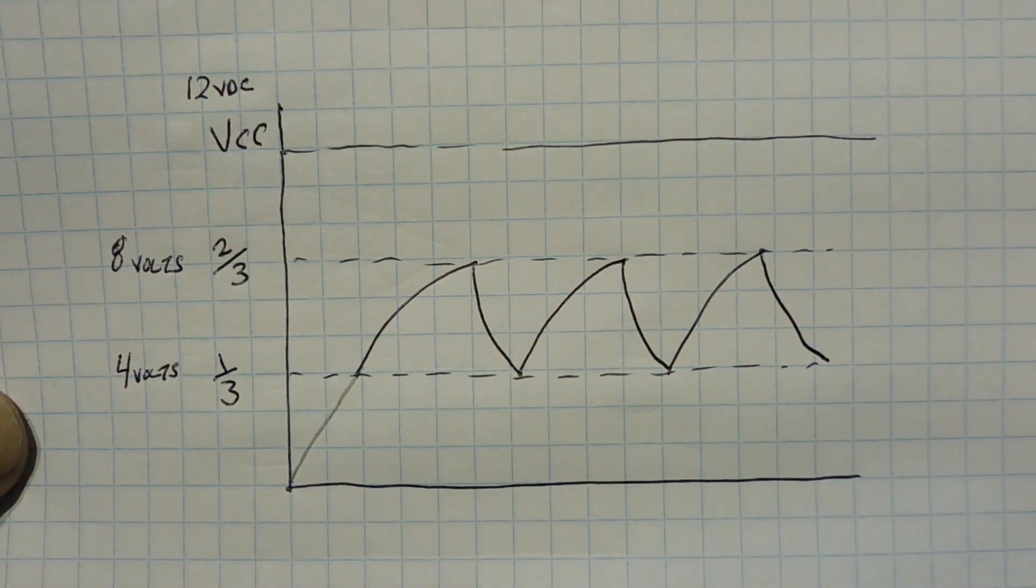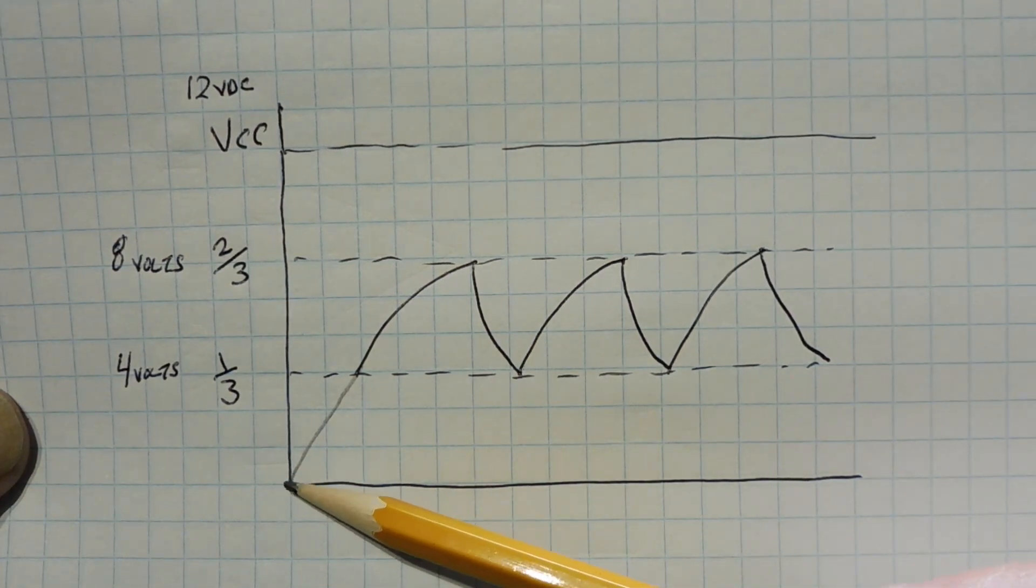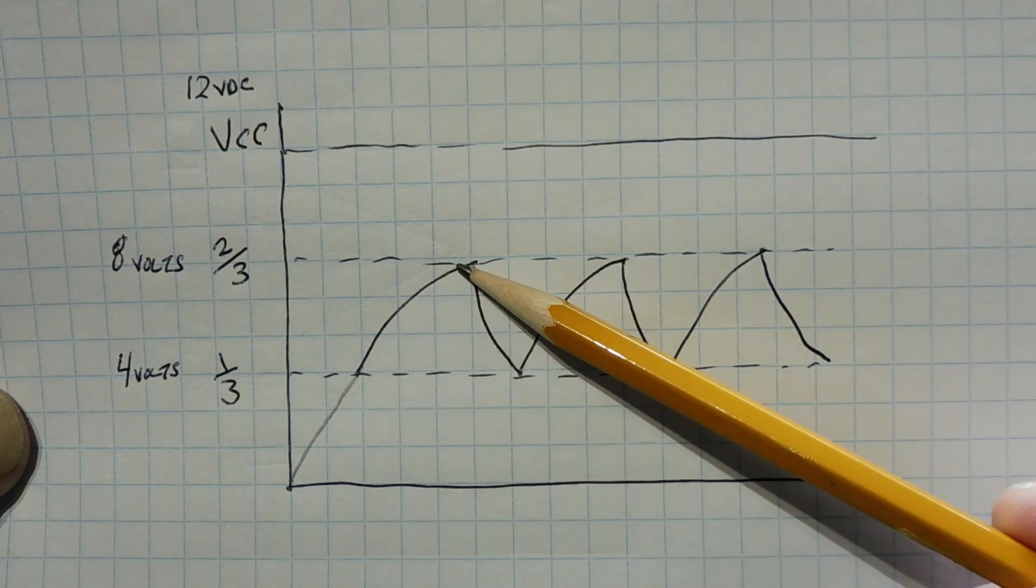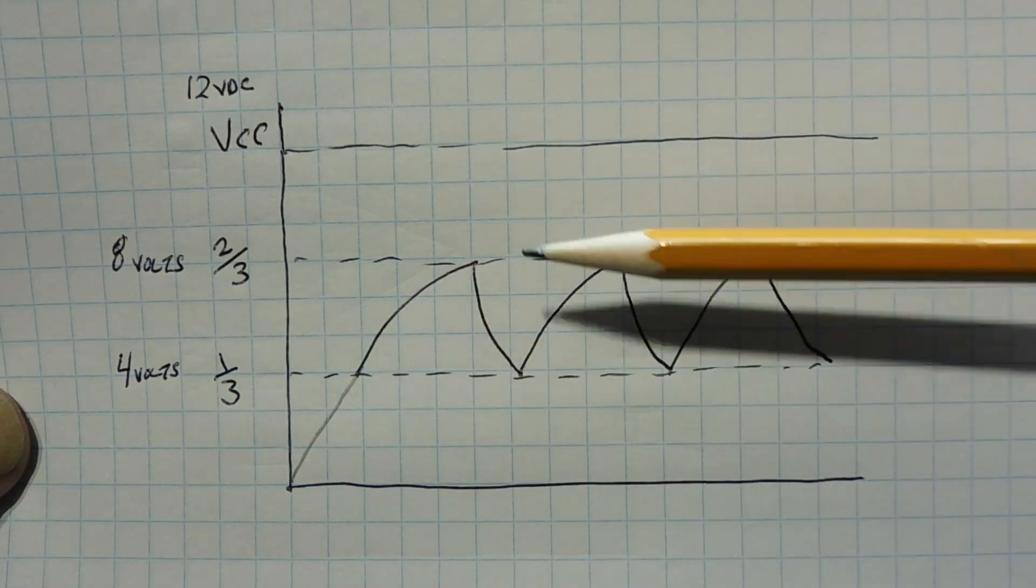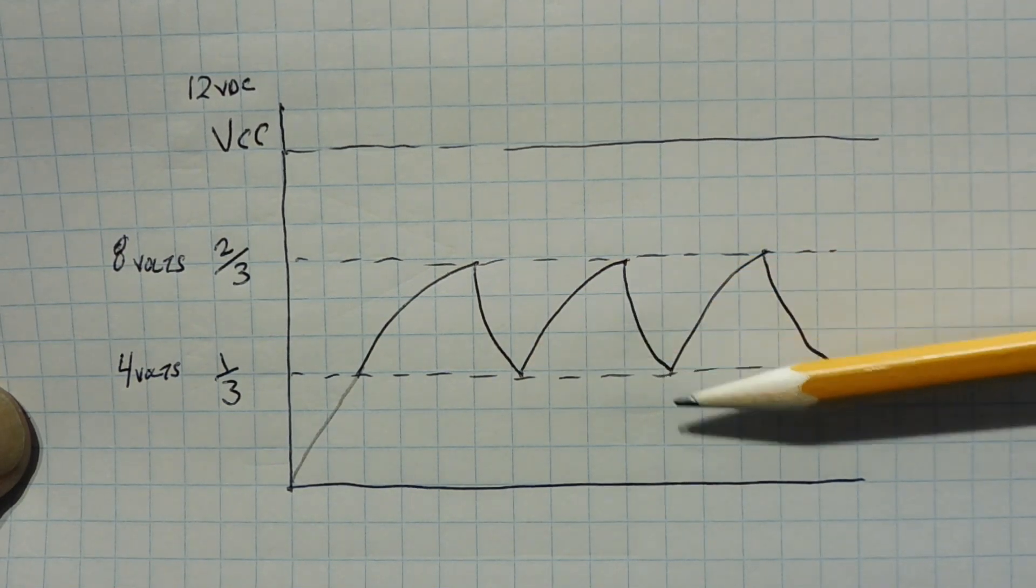Okay, if we put a scope on our timing capacitor, this is what we'll see. So when we first turn it on, it's going to charge up, the capacitor will charge up from zero, and it's going to go towards 8 volts. And when it hits 8 volts, it's going to trigger, and now it's going to discharge down towards 4 volts, and then it's going to do that over and over again.